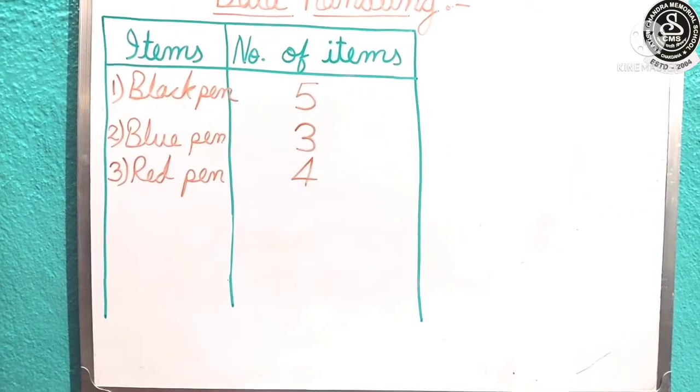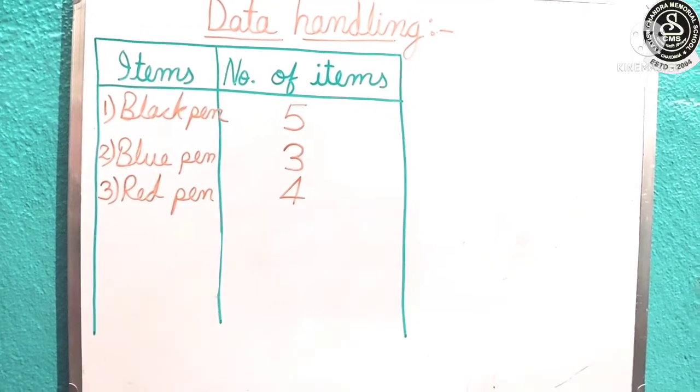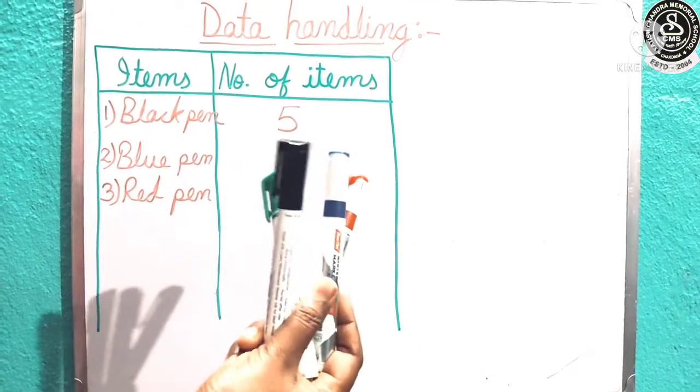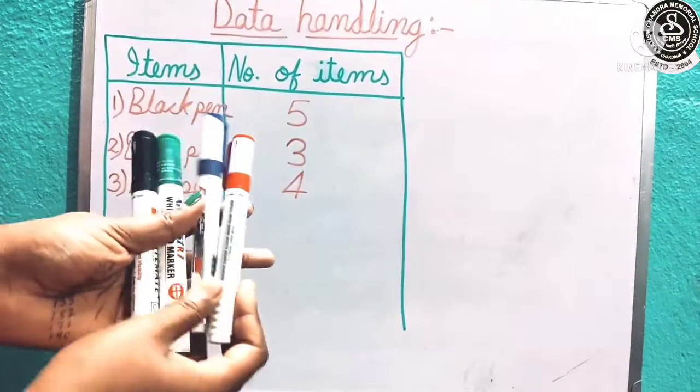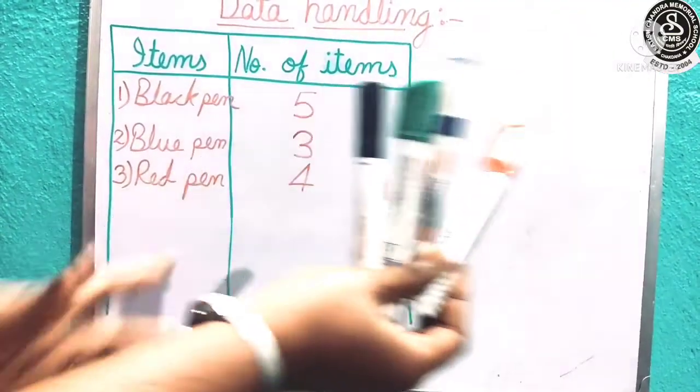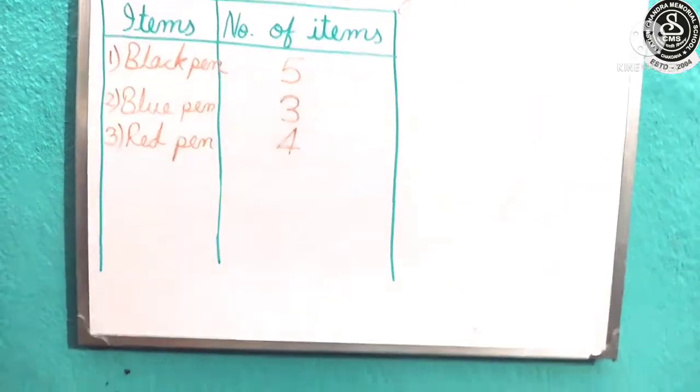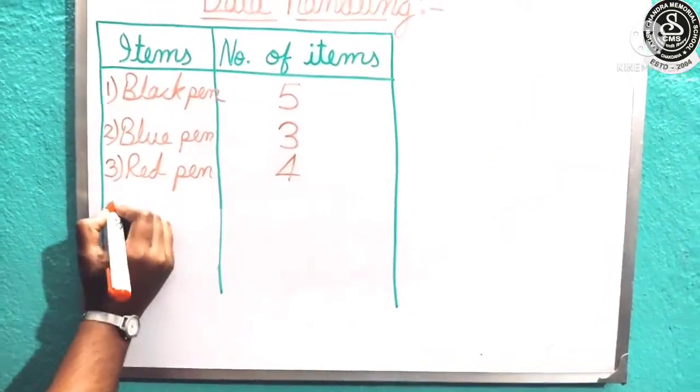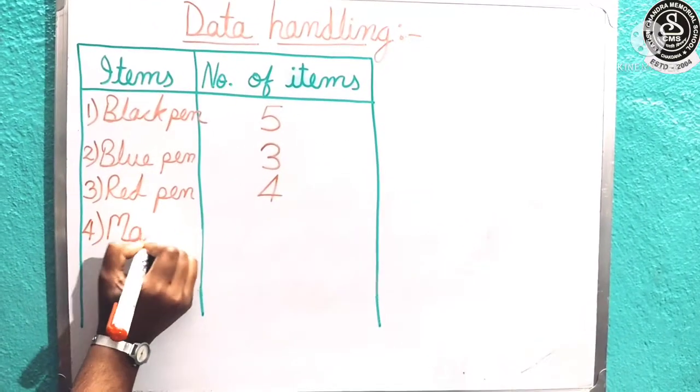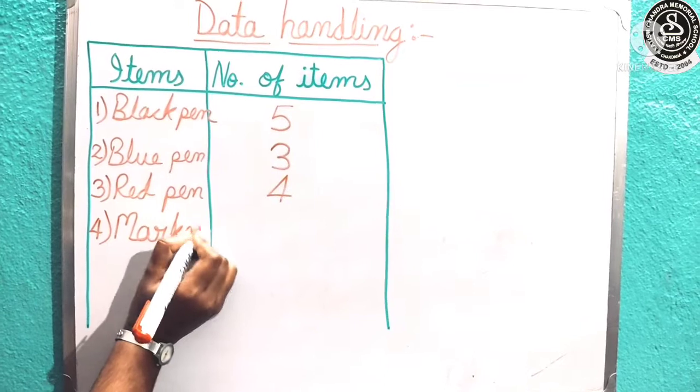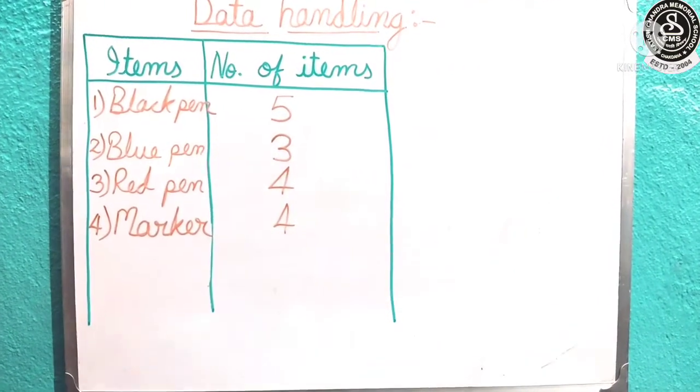Now the next thing, I have some markers as I am using to write on the board. Let us see how many markers are there. 1, 2, 3, 4. Total 4 marker I have. I am going to write that one also. Number 4 item: Marker, and how much? This one also we get 4.